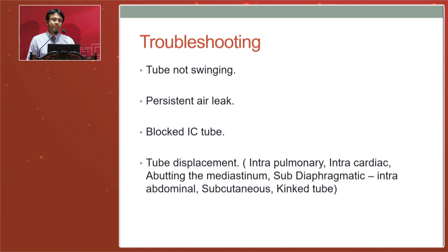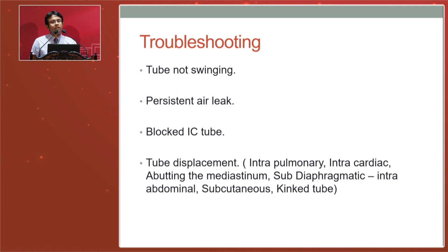Tube displacement is a common problem in general surgical setups, with patients sometimes referred to thoracic surgical centers. Often what is claimed to be an intraparenchymal location turns out to be in the fissure of the lung on exploration — no harm done, but drainage may not occur. Rarely the tube can enter an intracardiac position. I witnessed one case during my registrar period where a medical officer put an IC drain with a trocar, requiring a sternotomy to close an atrial injury — fortunately the patient survived. Never use a trocar when putting an IC tube.